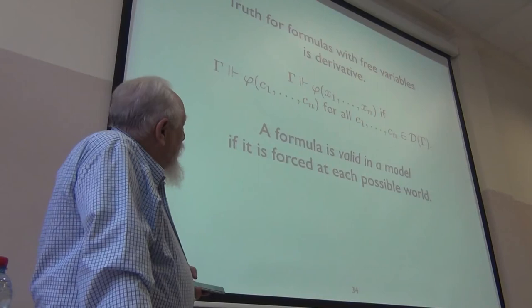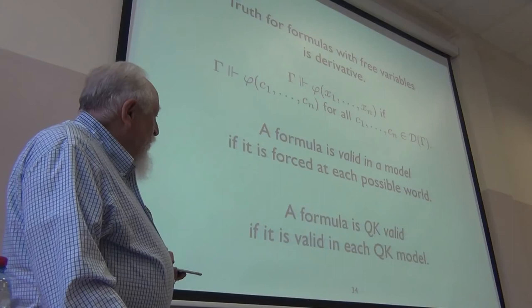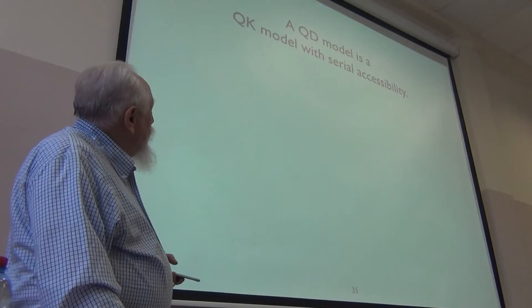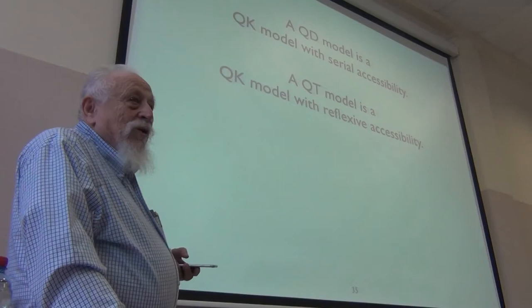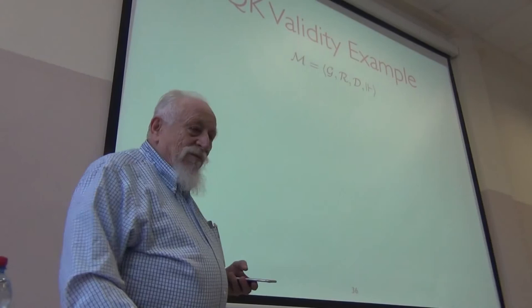A formula is valid in a model if it is true at each of the possible worlds. So now we have a semantics. For QK, there are no special conditions on accessibility. A QD model will require seriality — every world has a world accessible from it. QT will require reflexivity, exactly like D and T in the modal case.